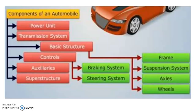Before that, let us see what are the components of the automobile. The components are: power unit, transmission system, basic structure, controls, auxiliary parts and superstructures. In basic structure, we will have frame, suspension system, axles and wheels. In controls, there is a braking system and steering system.